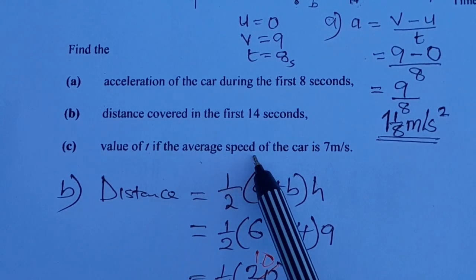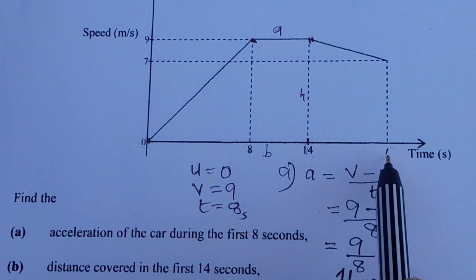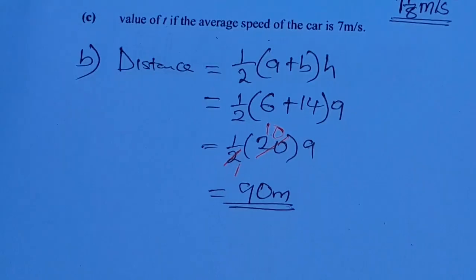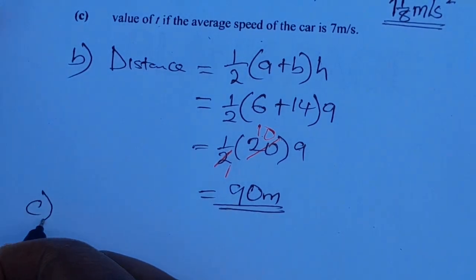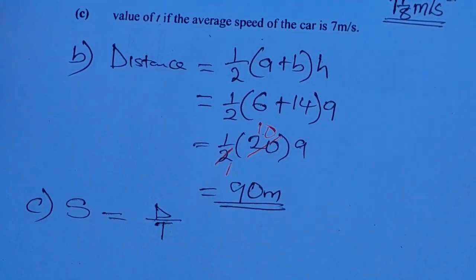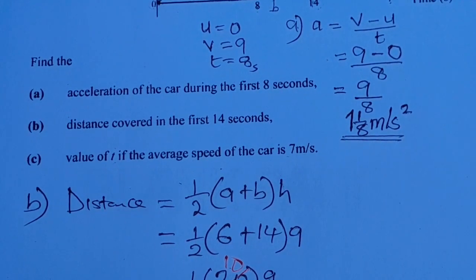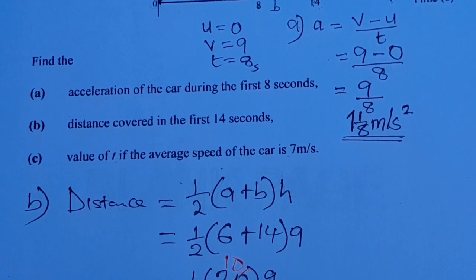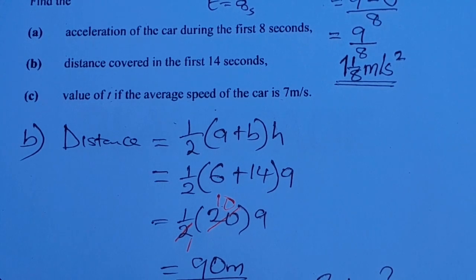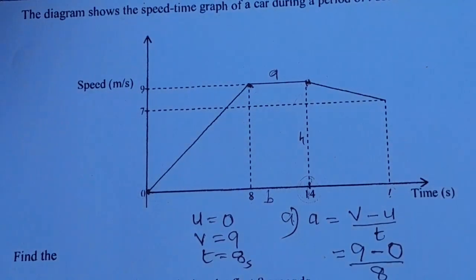The last question says: find the value of T if the average speed of the car is 7 meters per second. To find T, we first need to find the total distance. We already know the car covered 90 meters in the first 14 seconds.